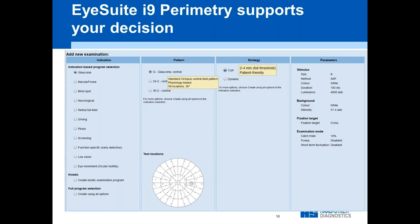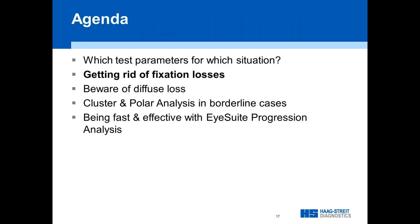If you have the latest iSuite version 9 and above, the software actually guides you through this process — it asks what indication you're testing for, then presents the most common choices people make worldwide and provides background explanations. So it should be fairly easy to make an informed decision on what to use. And obviously you set this up once and then keep doing what you're doing.